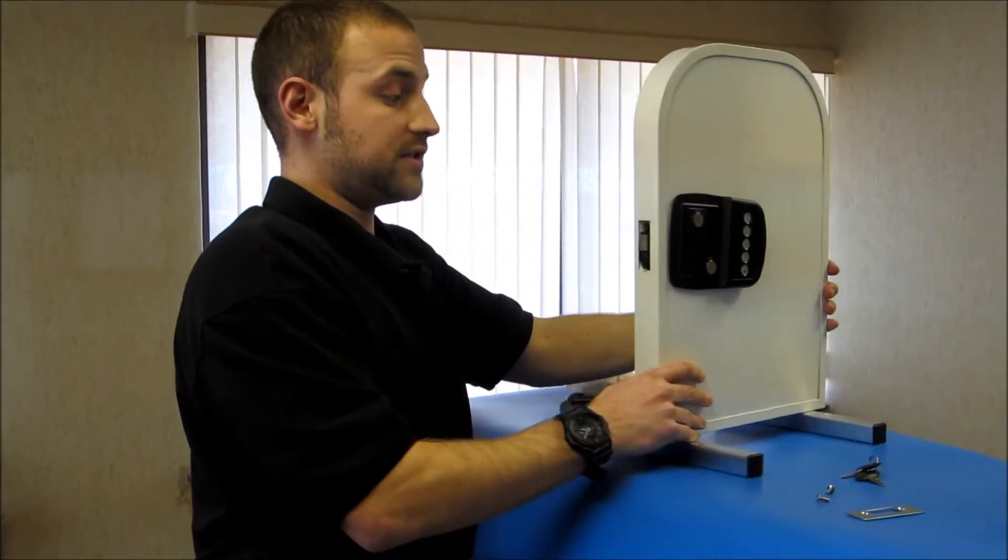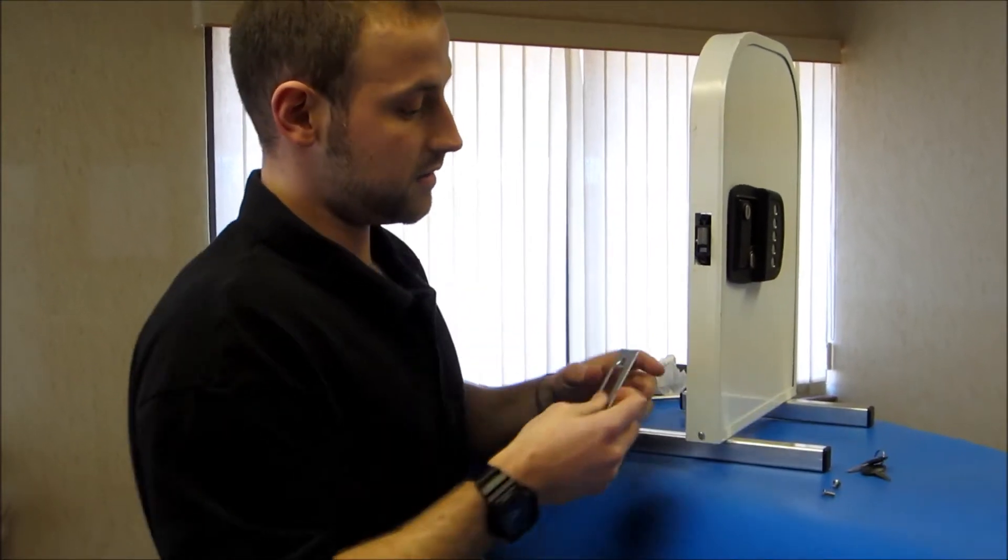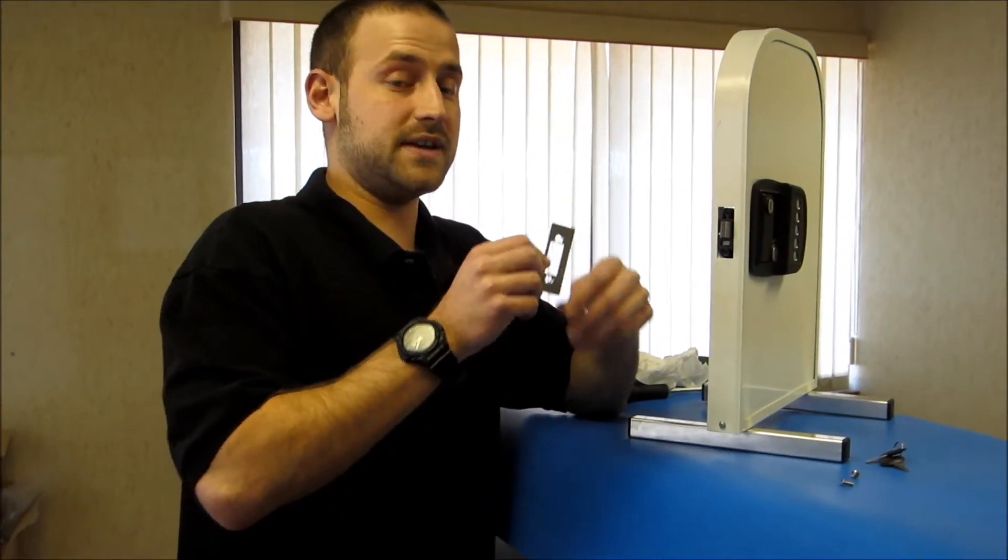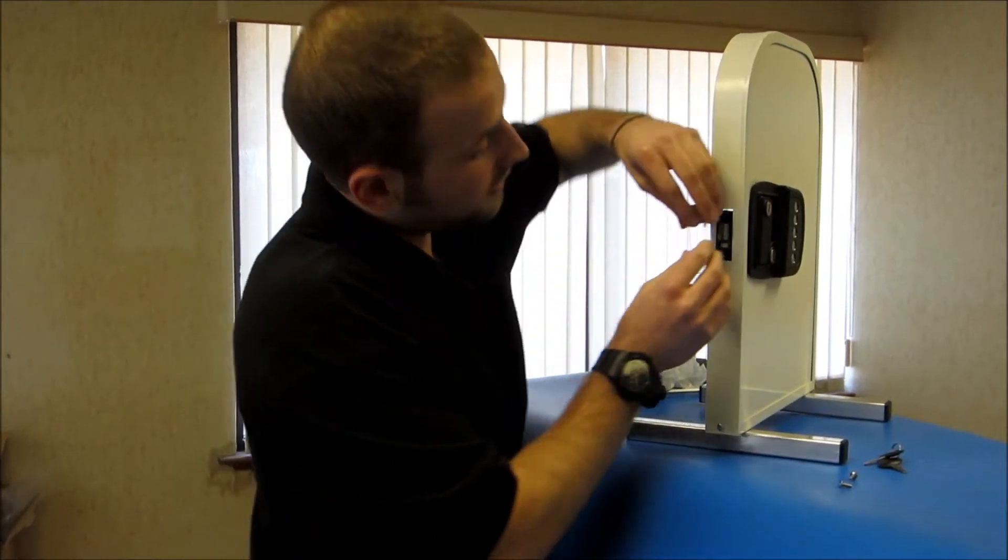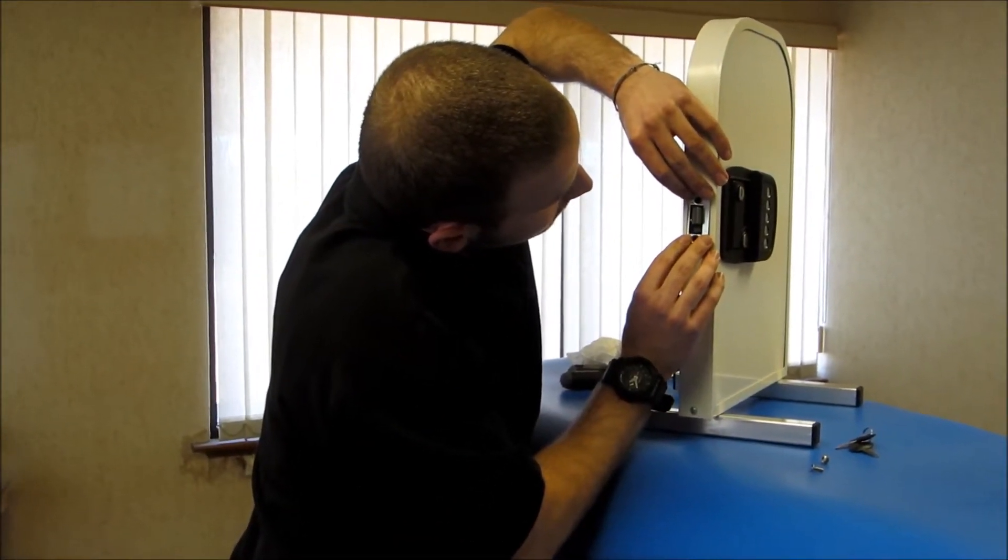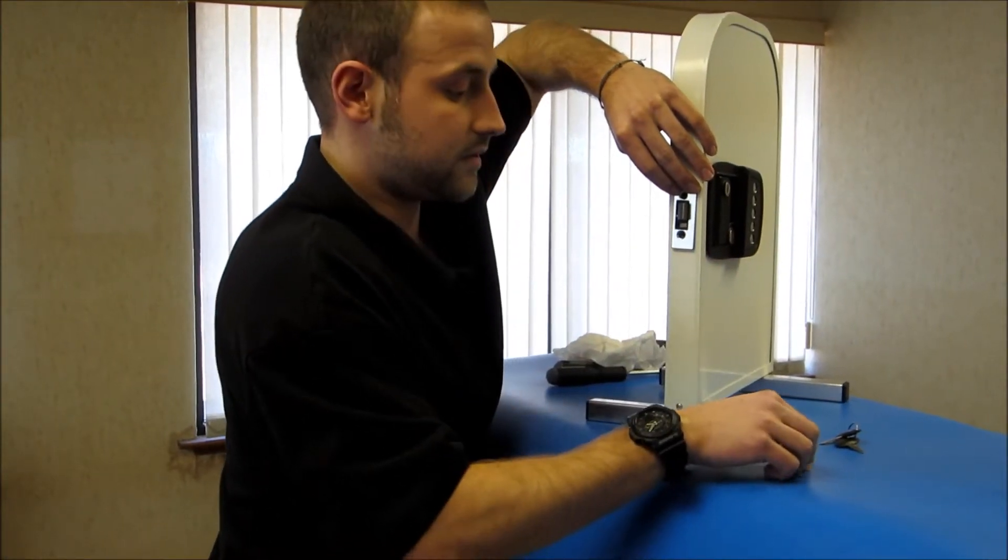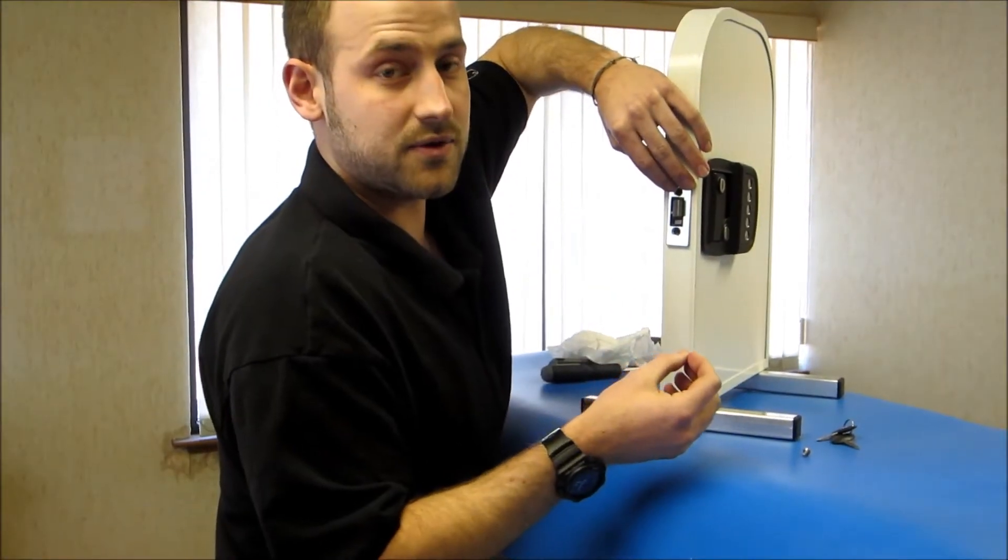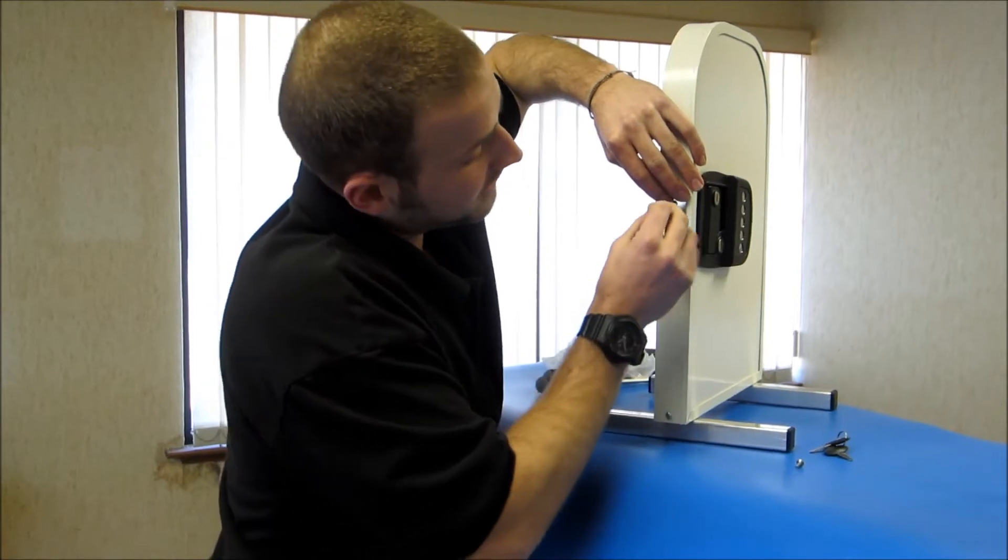Then you want to grab your edge cover and make sure that the smaller portion is facing the trailer. Align the two holes with the holes on the lock. Grab your flathead edge cover screw and make sure to install the top screw first.